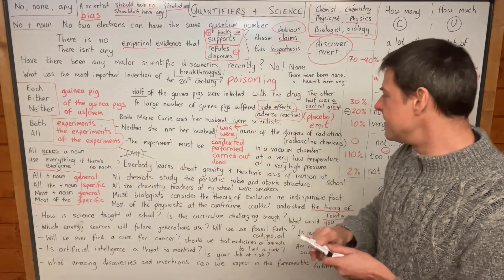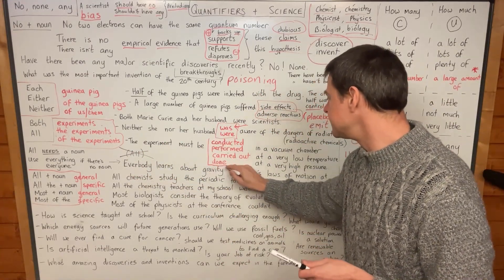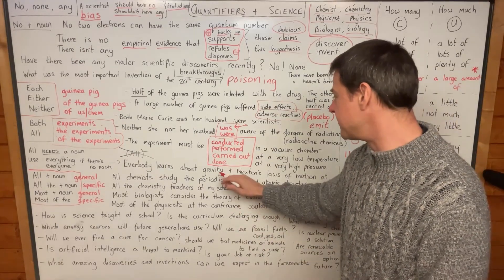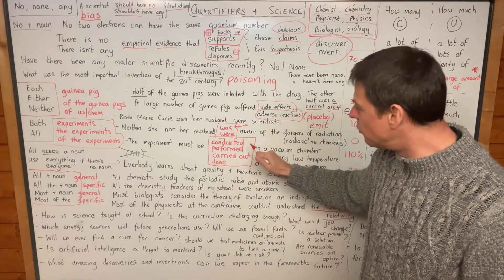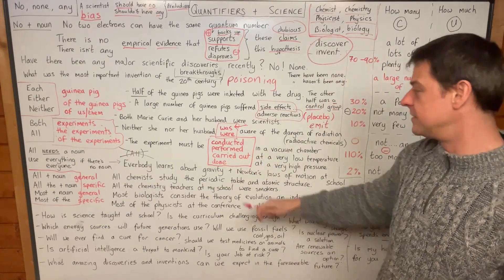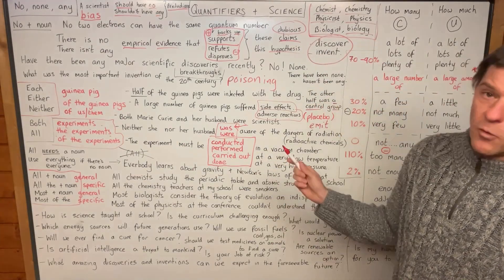The experiment must be conducted, performed, carried out, or done. So you do an experiment, you carry out an experiment, you perform an experiment, you conduct an experiment. This is what scientists do—they do experiments.